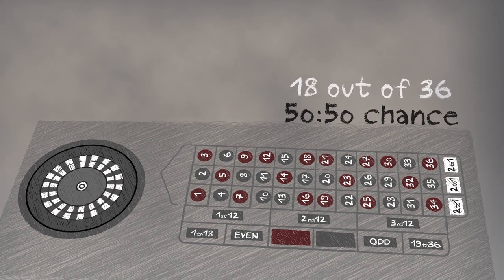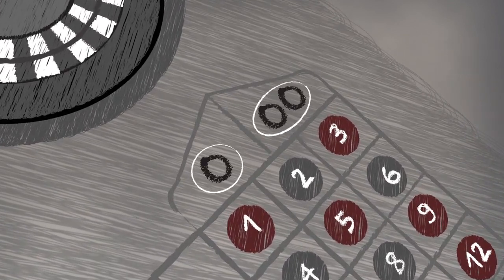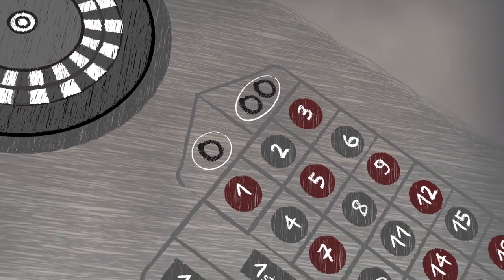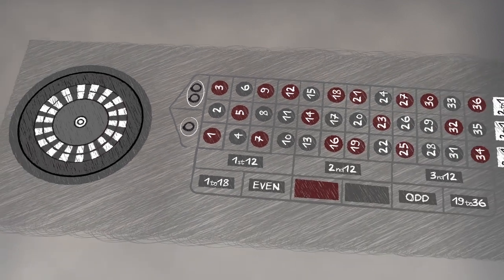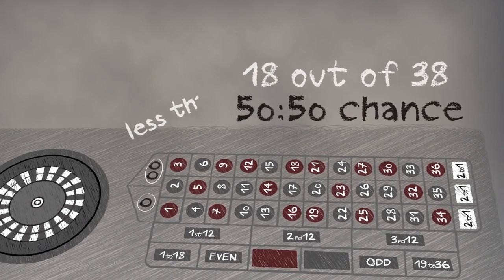But there is a catch. There are two extra numbers, 0 and 00. There are actually 38 numbers that the ball can land on. So the chances of winning are 18 over 38 or less than 50-50.